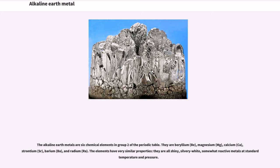Alkaline Earth Metals. The alkaline earth metals are six chemical elements in group 2 of the periodic table. They are beryllium (Be), magnesium (Mg), calcium (Ca), strontium (Sr), barium (Ba), and radium. The elements have very similar properties.